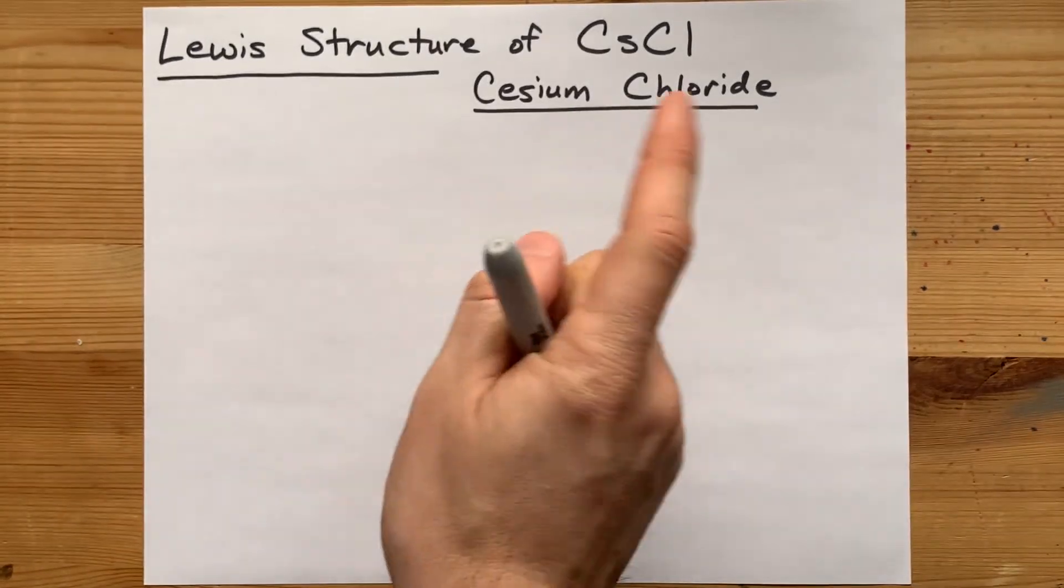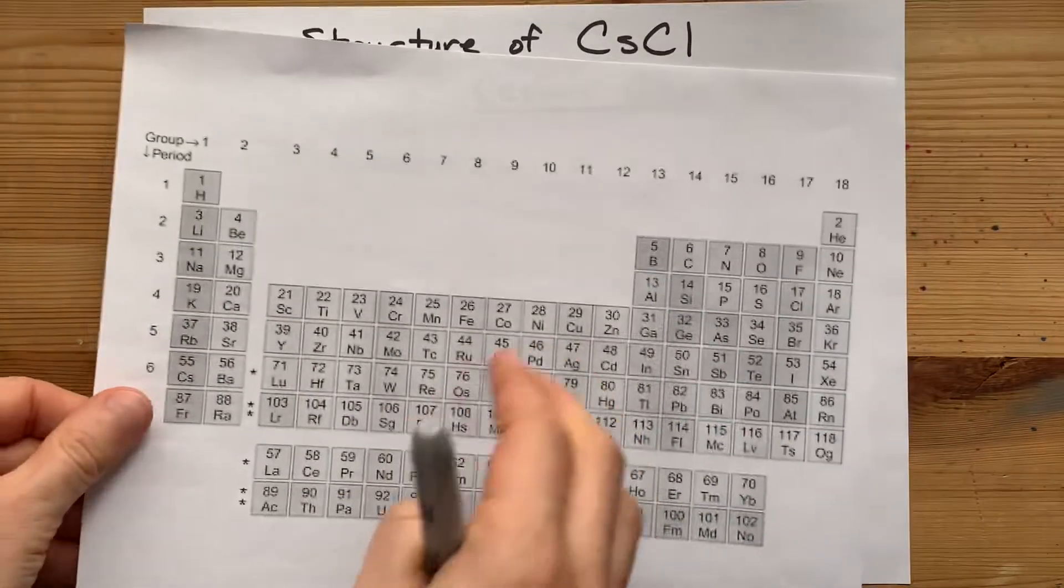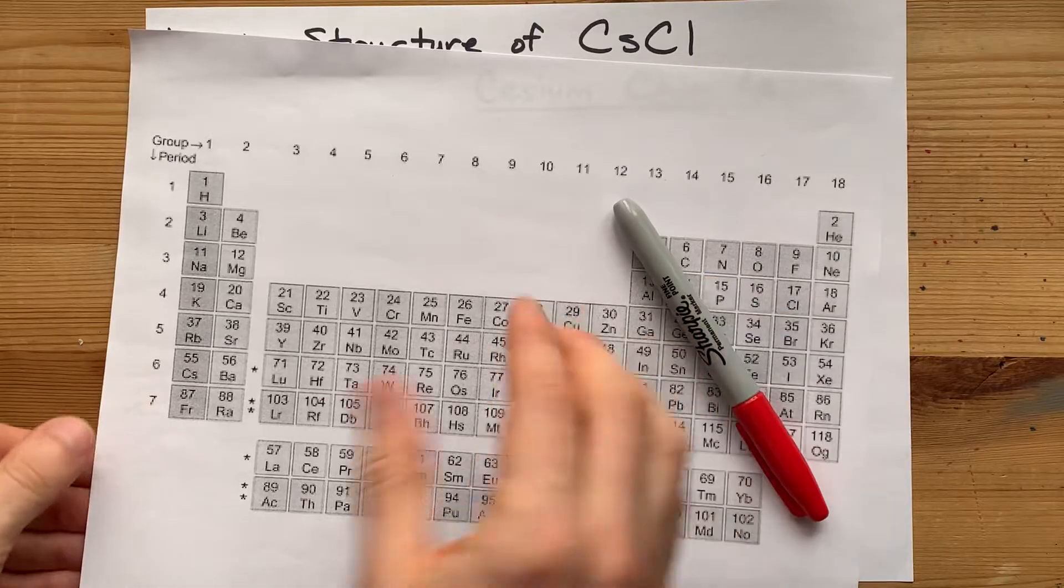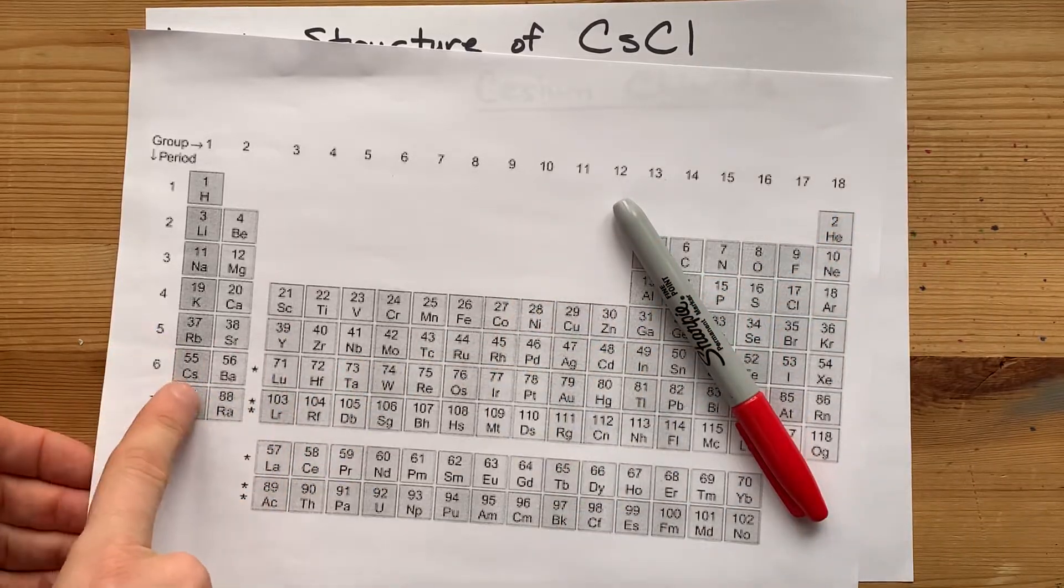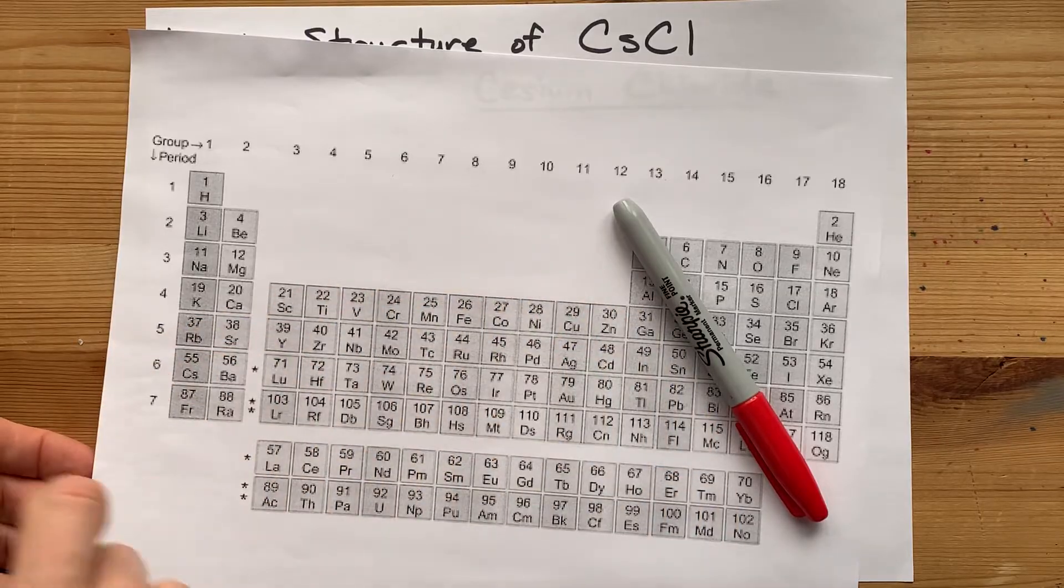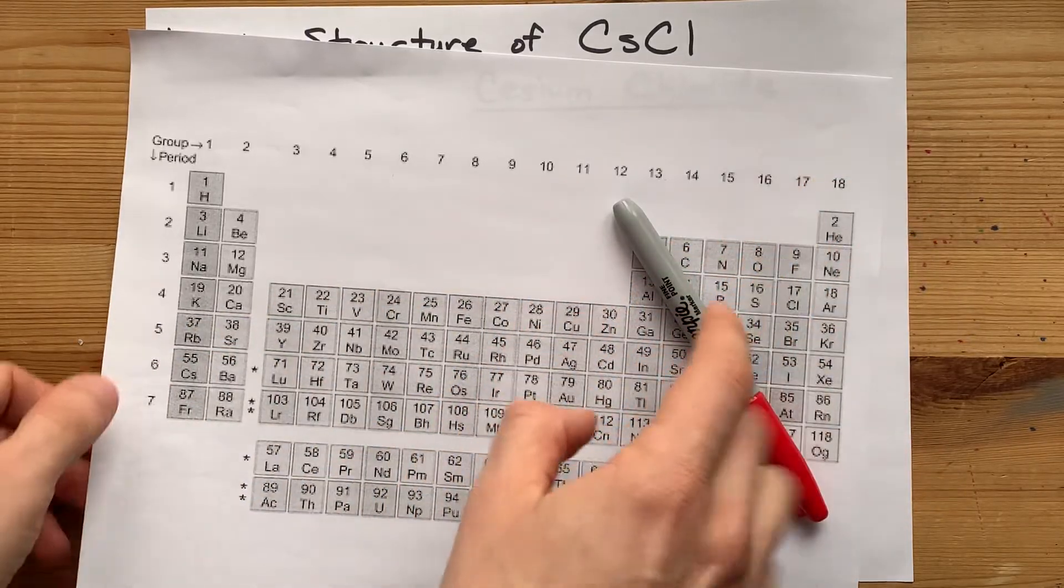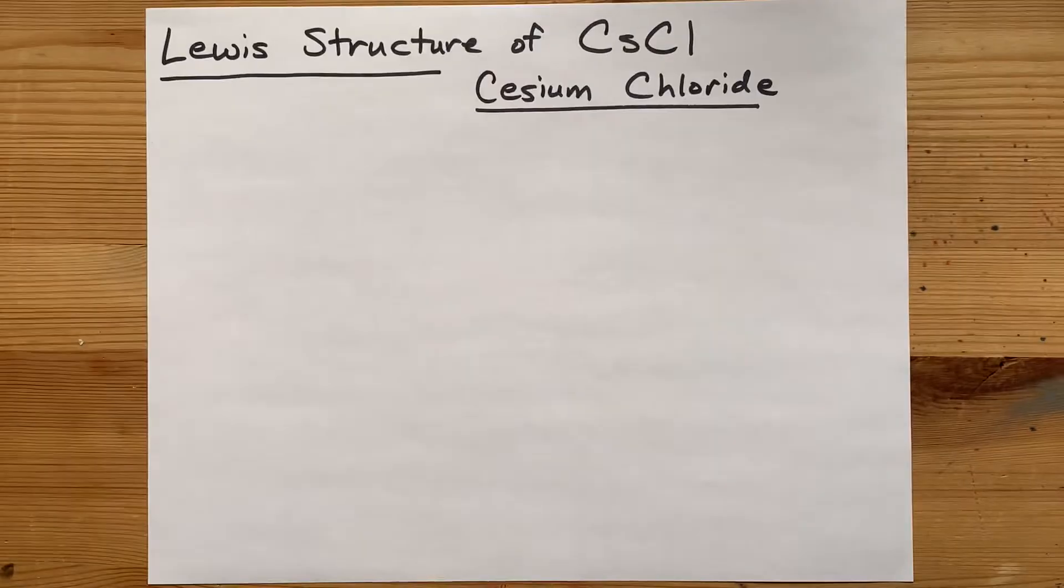Lewis structure of cesium chloride. First, note that this staircase separates metals from non-metals. Cesium is a metal from the left-hand side of the periodic table. Chlorine is a non-metal from the right-hand side.